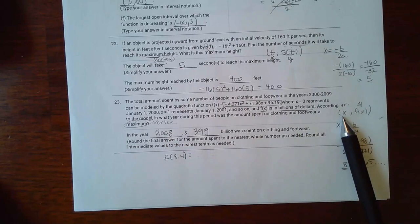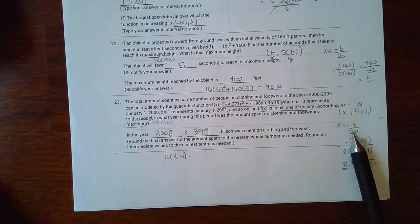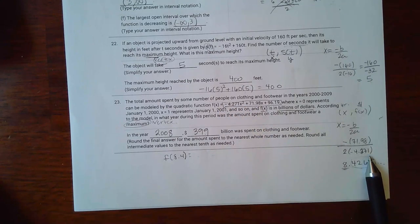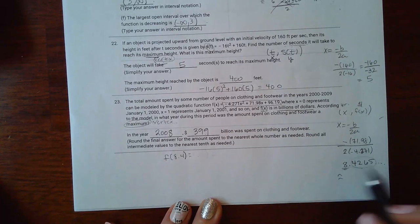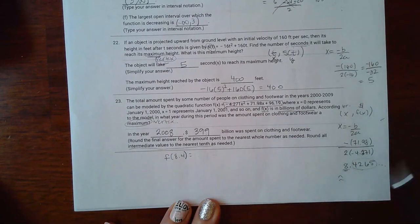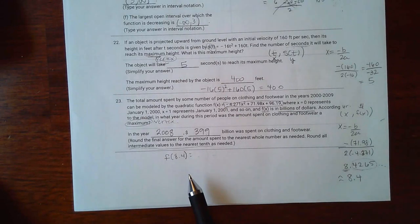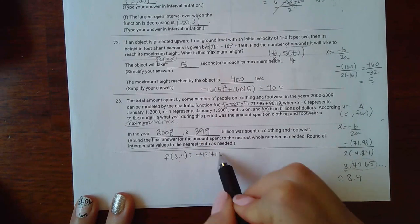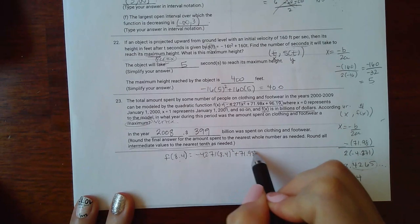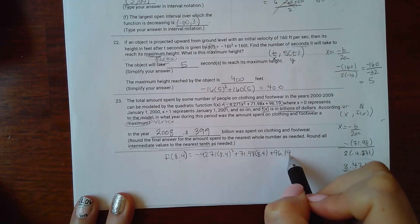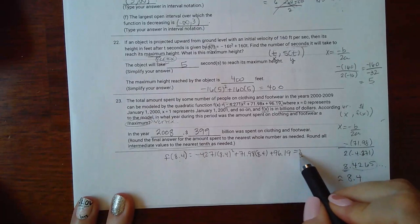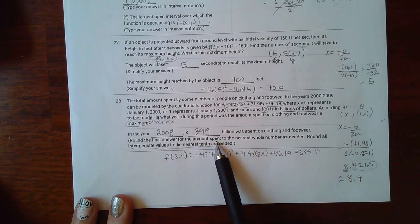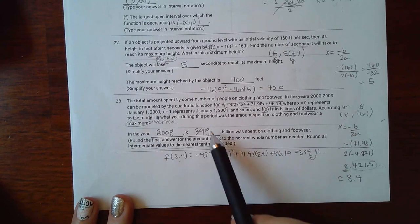So if I want to know the year I have to figure out the x value of that vertex. So I did the negative b over 2a. Negative of 71.98 over 2 times negative 4.271, and I got this value, but if you round it to the nearest tenth like it tells me here - round all intermediate values to the nearest tenth - that is 8.4. So when I go to find the y value, the f(x), I need to plug in 8.4. So essentially what I did was plug in 8.4 into the function and then I found that the y value was 399.4 to something or another, but it said round the amount spent to the nearest whole number. So the 4 wasn't going to affect the 9. So it stayed 399.